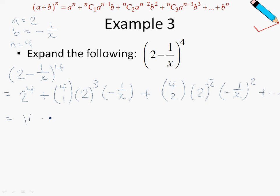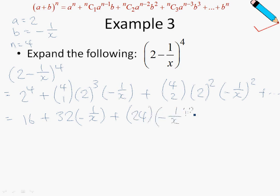Simplifying: 2 to the power of 4 is 16. 4 choose 1 is 4, times 2 to the power of 3 (which is 8), times negative 1 over x — so that gives negative 32 over x. Then 4 choose 2 is 6, times 2 squared (which is 4), times negative 1 over x squared — which gives 24 over x squared. So the first three terms are: 16 − 32/x + 24/x².